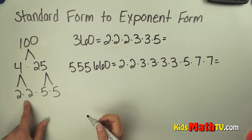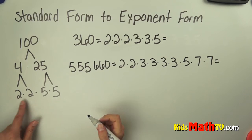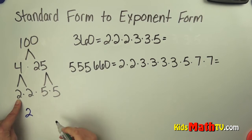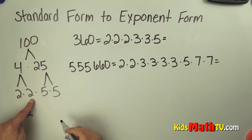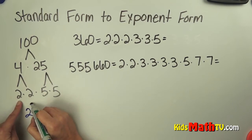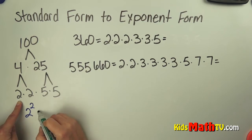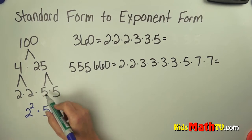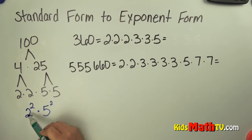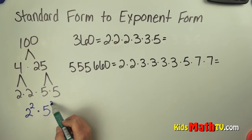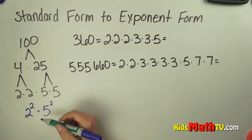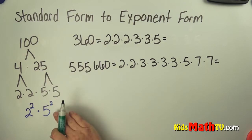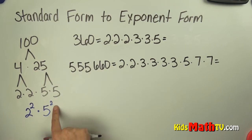I look at these numbers — these numbers are all bases. There's a base of 2, and I count how many 2's there are: 1, 2 — there are 2 of them. So my base is 2, and the exponent is also 2. We multiply that by another base. The base is 5 — how many of those 5's are there? There are 2. So this is 2 to the 2nd power times 5 to the 2nd power, or 2 times 2 times 5 times 5. If you multiply that all back out, you get 100. So 100 in standard form is 2 squared times 5 squared.